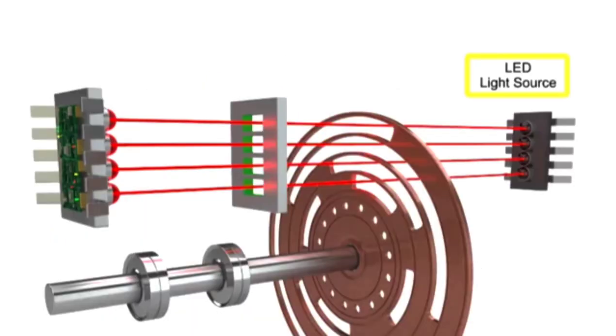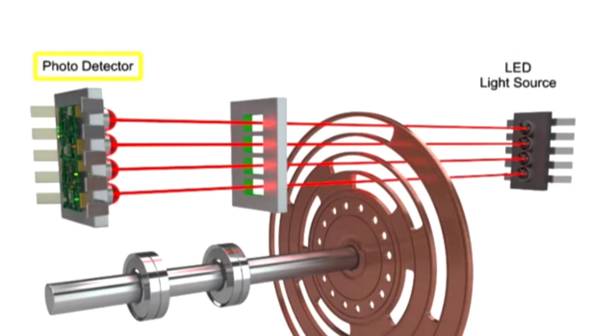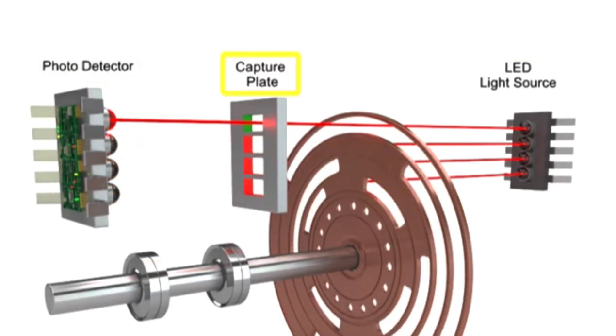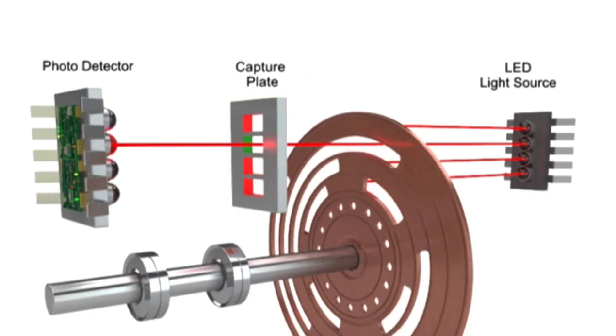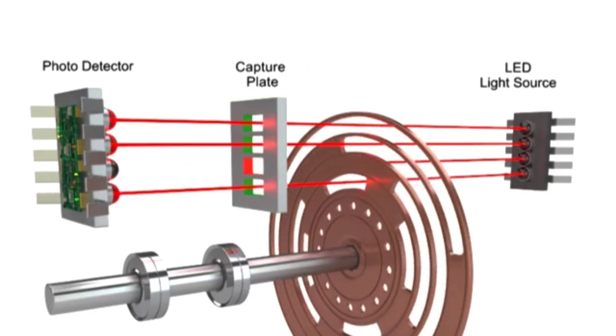A light source located on the opposite side of the photocells passes light through a capture plate. As the encoder disk rotates, light is either transmitted or blocked according to the pattern.